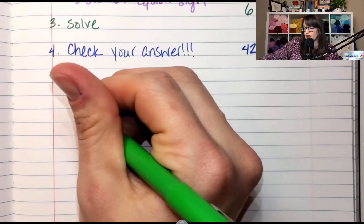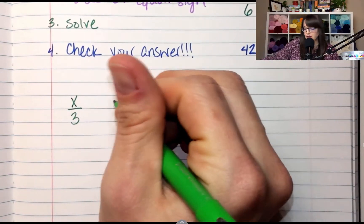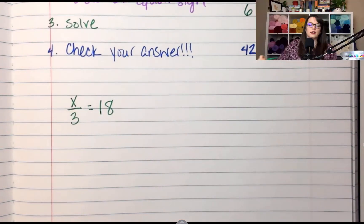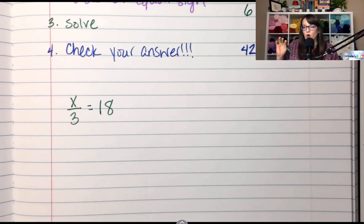All right, the first one I've got X over 3, or divided by 3, equals 18. All right, the variable is X. What operation is happening right here?